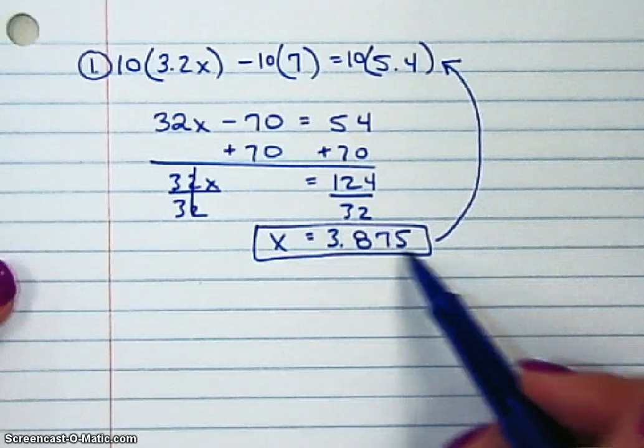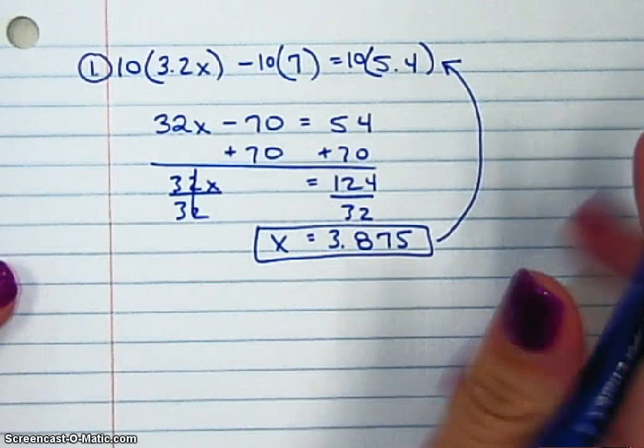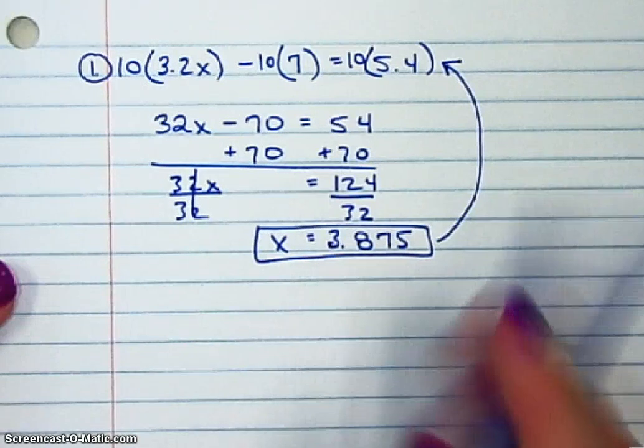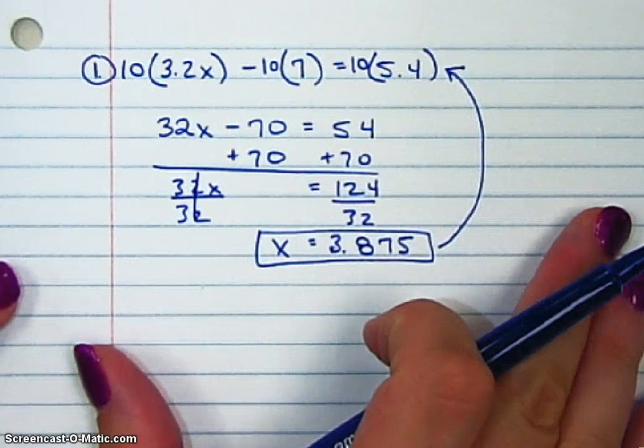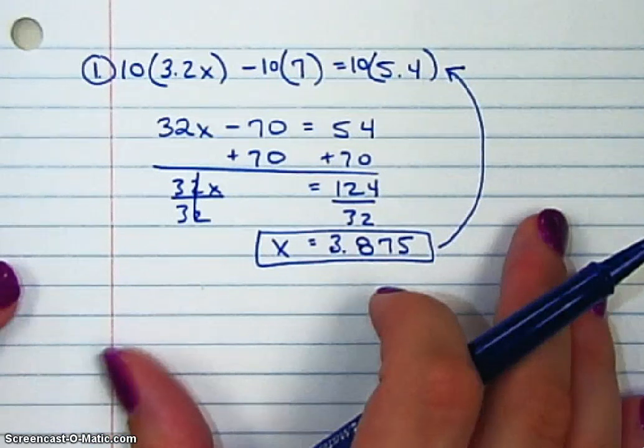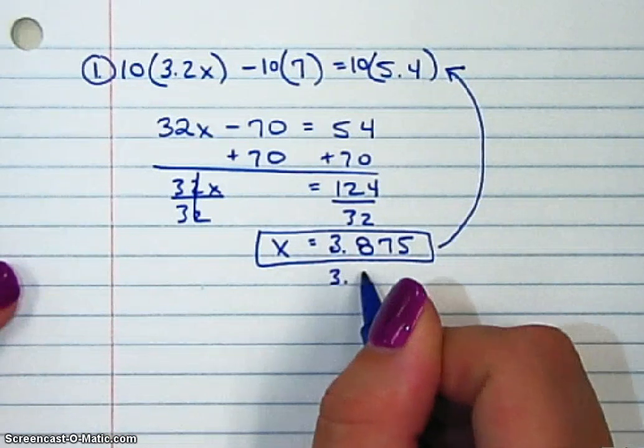Now, if you want to check, you want to plug it back in. The exception to write an answer as a fraction is if it says to round. If it said round to two decimal places, I would have put 3.88.